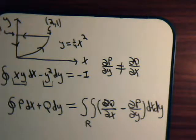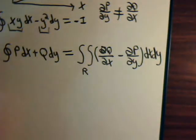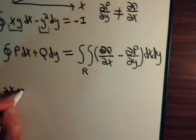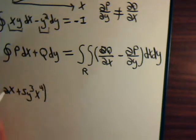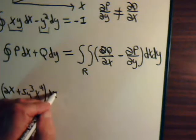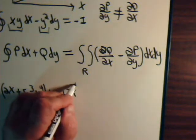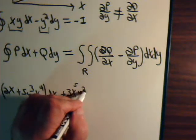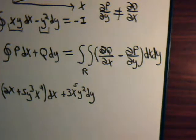Now, suppose we have an exact differential. In the last video, we had considered a specific problem. We had this: 2X plus 5Y cubed X to the 4th dx, then plus 3X to the 5th Y squared dy. And this is an exact differential.